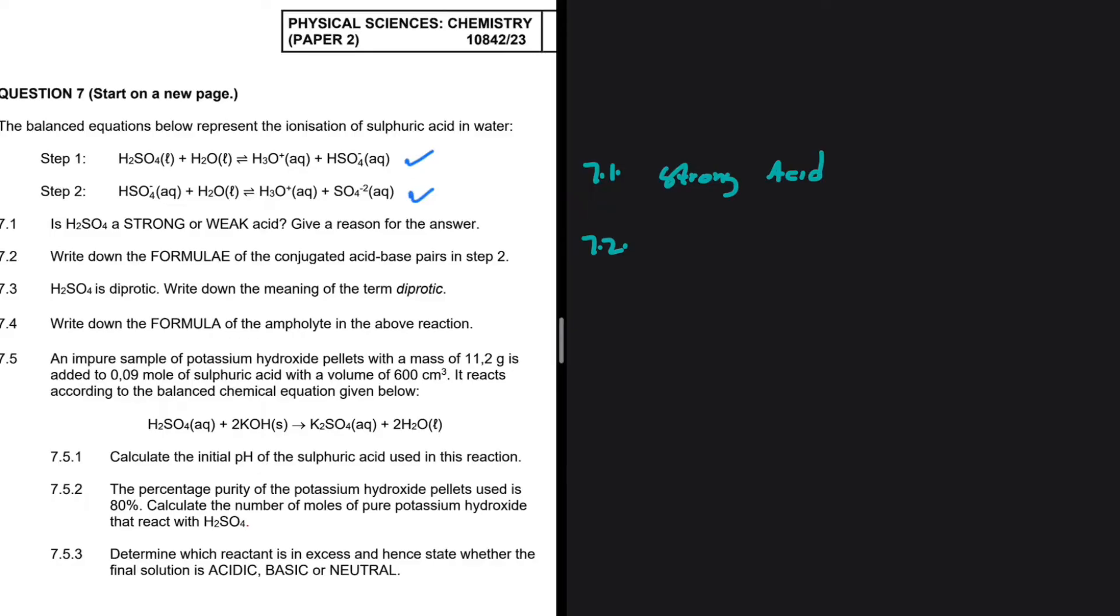So let's take a look at the reaction. We have HSO4 minus plus H2O. This gives us H3O plus plus SO4 2 minus. So acid-base conjugate pairs. Let's start with HSO4. In the products, we have SO4 2 minus.